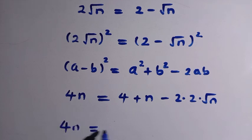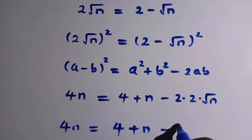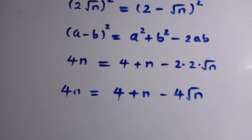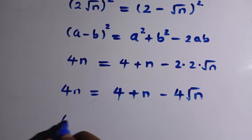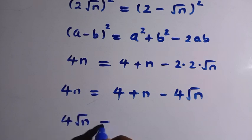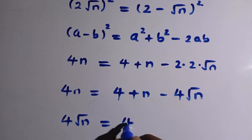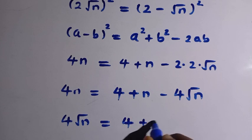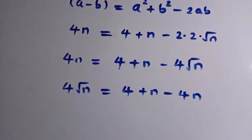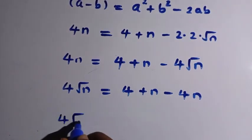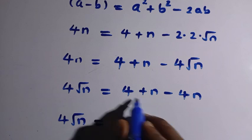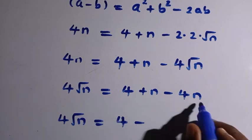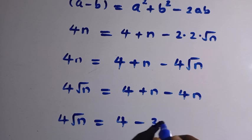So we have 4n equals 4 + n minus 4√n. Rearranging, we take 4√n to the other side: 4√n equals 4 + n minus 4n, which simplifies to 4√n equals 4 minus 3n.